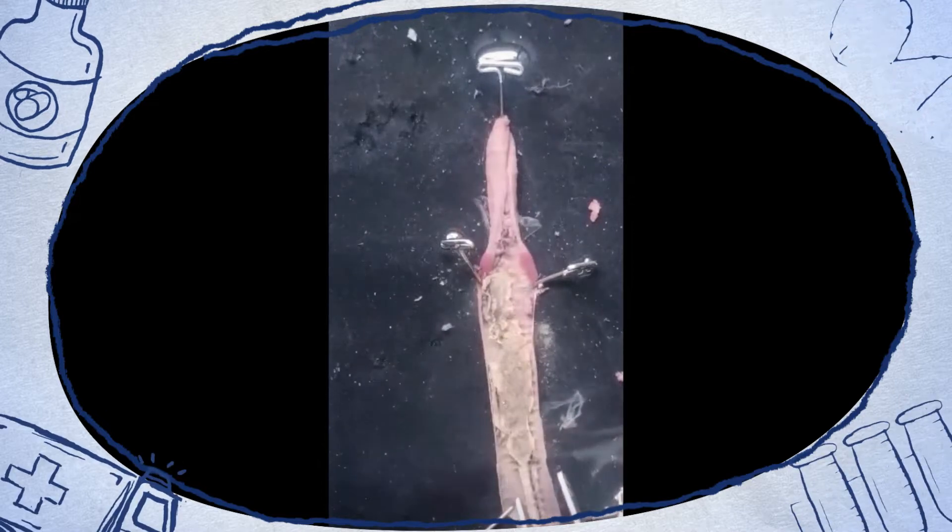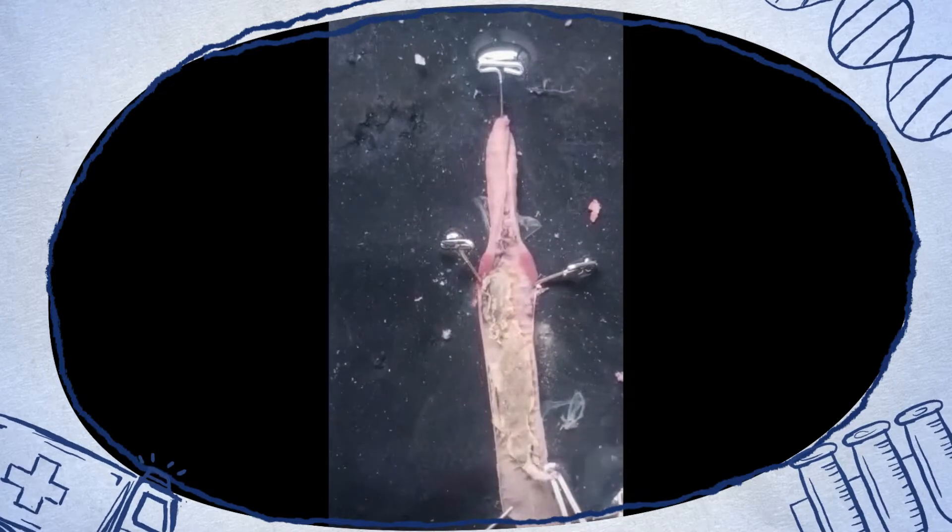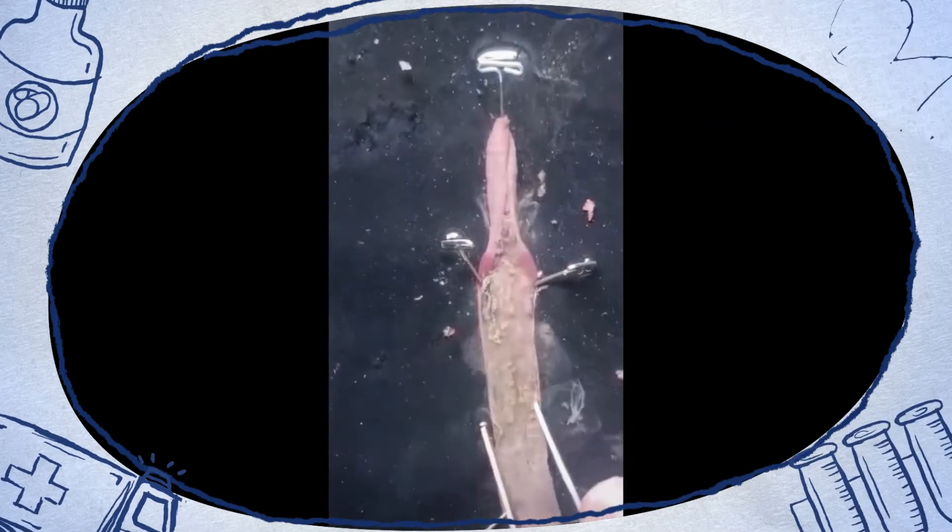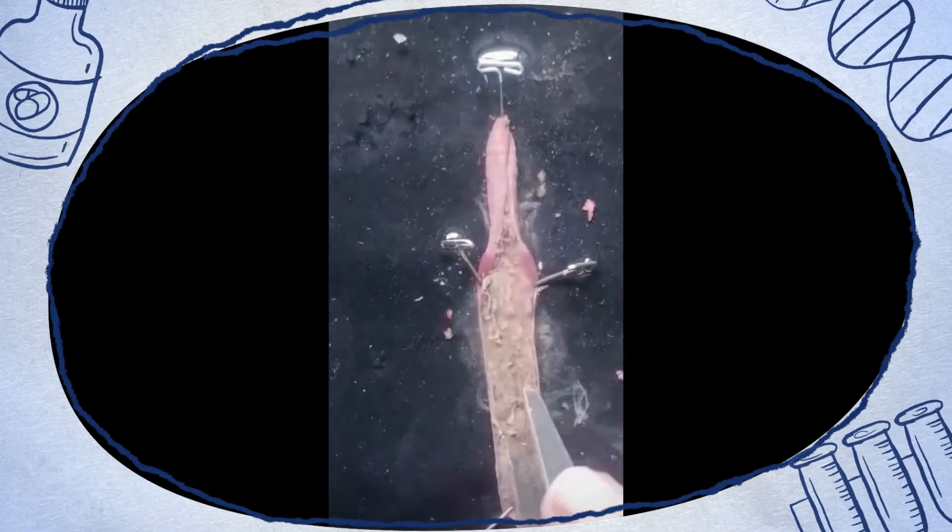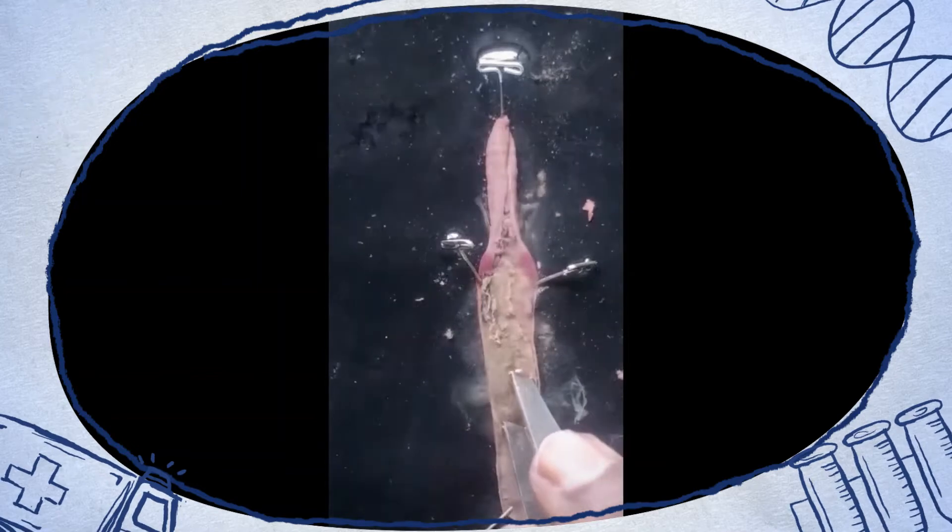The nervous system of the earthworm is located on the ventral side. Hence, we can remove the digestive tract.